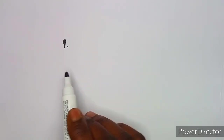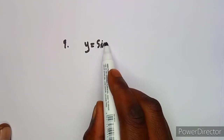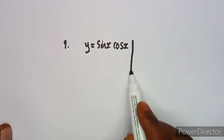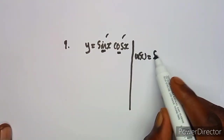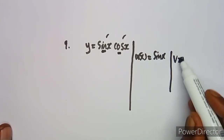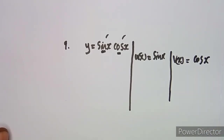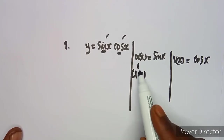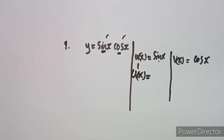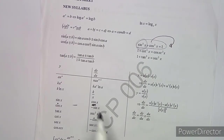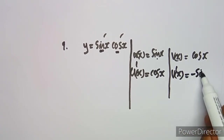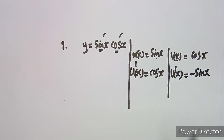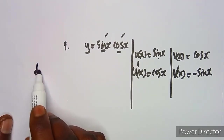Let's try another question. We have y = sin(x)·cos(x). So we need U(x) and V(x): U(x) = sin(x) and V(x) = cos(x). Now let's find the derivatives with respect to X. For U(x) = sin(x): the derivative of sin is cos, so U'(x) = cos(x). For V(x) = cos(x): the derivative of cos is minus sine, so V'(x) = −sin(x).